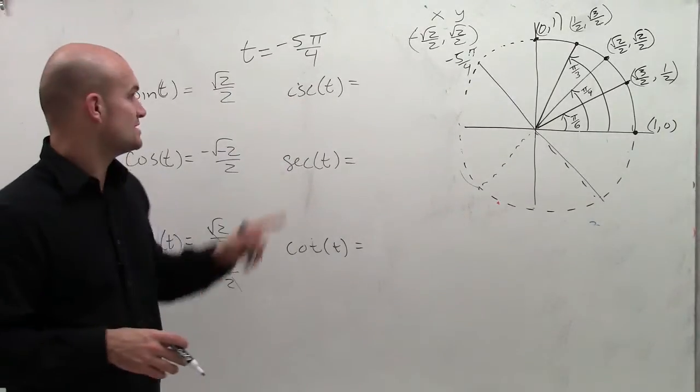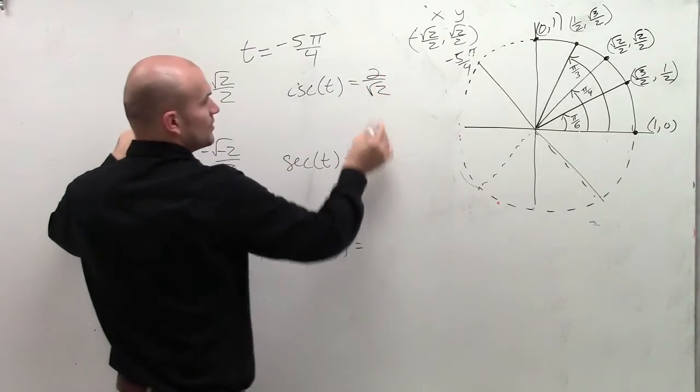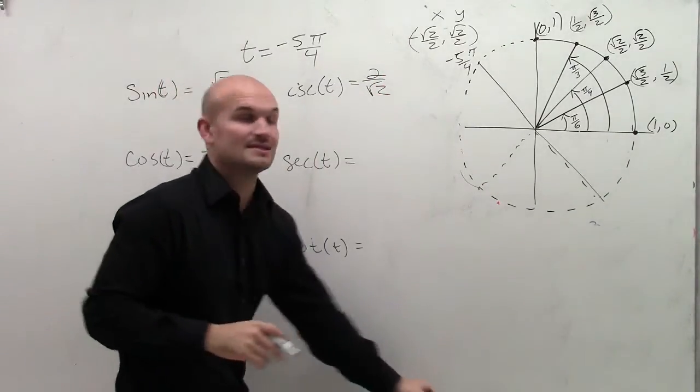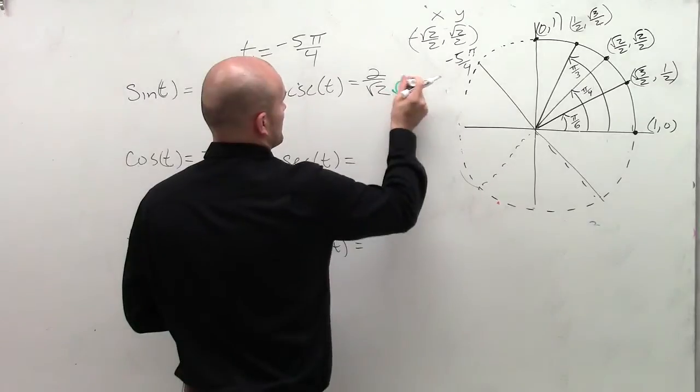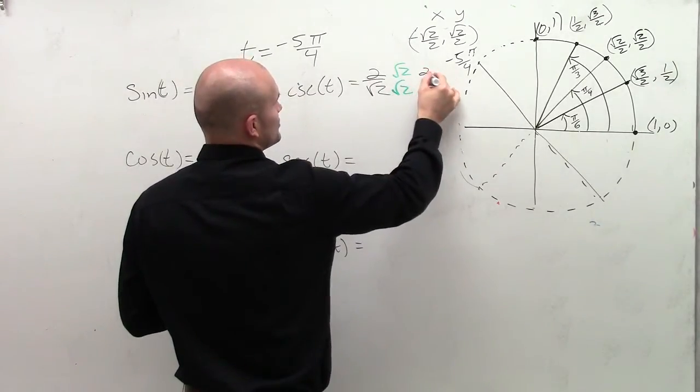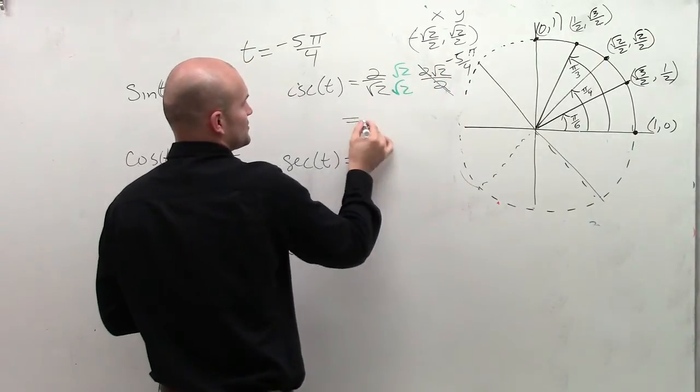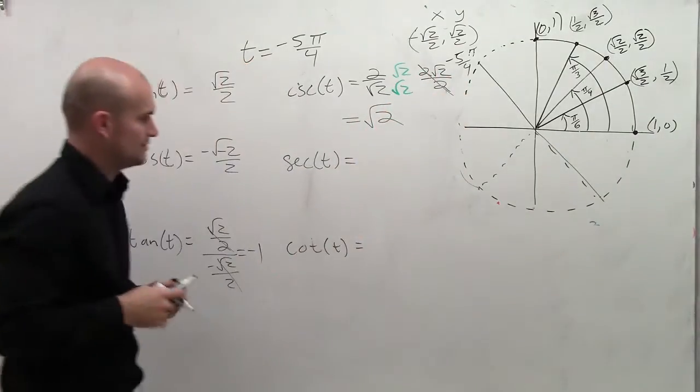The cosecant is going to be the reciprocal of sine. So I could say it's going to be 2 over square root of 2. Make sure you rationalize the denominator on this. And your final answer, you'd have 2 square root of 2 divided by 2. Those cancel out, so you're just left with square root of 2.